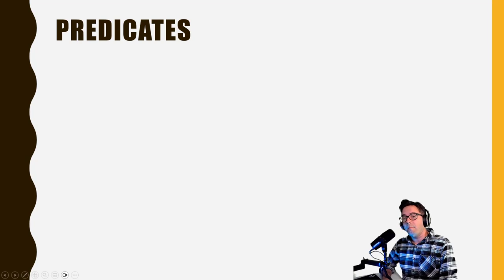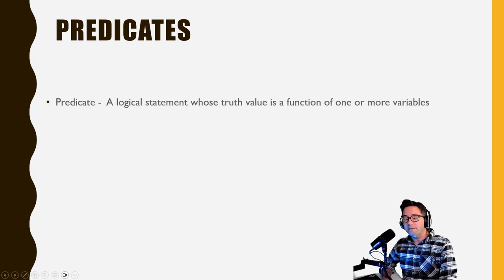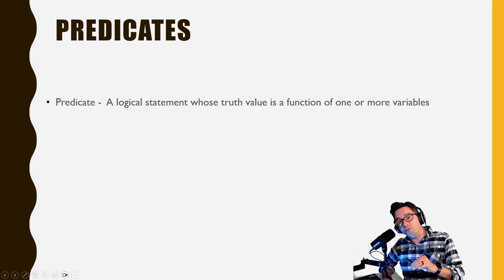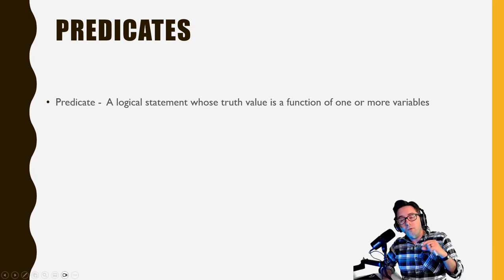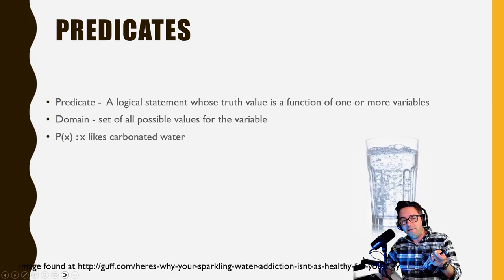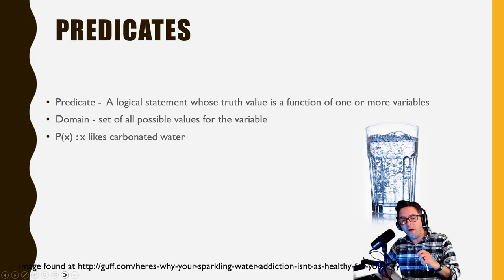Now we're going to talk about predicates. A predicate is a logical statement with a truth value that is a function of one or more variables. Predicates are like propositions but have variable truth values depending upon what they're talking about. The pool of possible things is called the domain — it's a set of all possible values for that variable. For example, if I have the predicate p(x) where x likes carbonated water, we can come up with different instances for it.